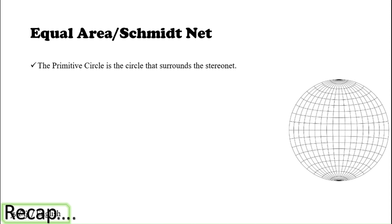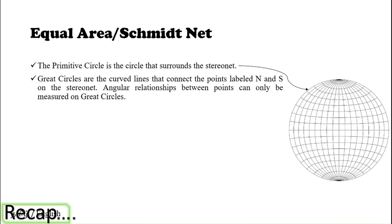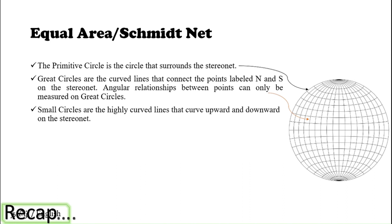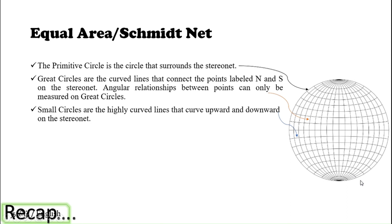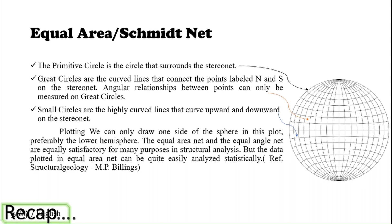Let us see the parts of the stereonet. The first is the primitive circle, which is the outermost circle in the Schmidt net — it surrounds the stereo net. The second part is the great circle: these are the curved lines that connect points from north to south on the stereo net, and this is the important line used for measuring angular relationships between any two points. The third part is the small circles — highly curved lines that curve upward in the northern hemisphere and downward in the southern hemisphere.